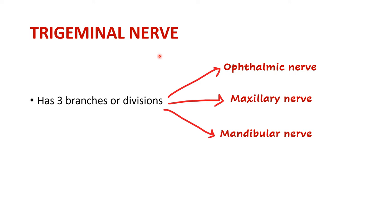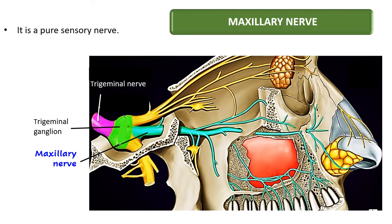Regarding the nuclei and functional components of the trigeminal nerve, I have considered those aspects in another video which is mainly on the mandibular nerve, and I will put the link of that video in the description box. Now, the maxillary nerve is a pure sensory nerve — that means it will not supply any muscles in the head region. Out of the three divisions of the trigeminal nerve, the ophthalmic as well as the maxillary are pure sensory.